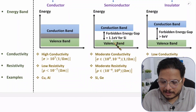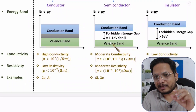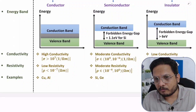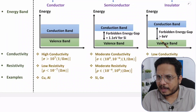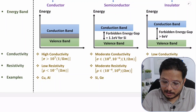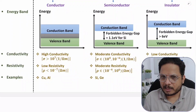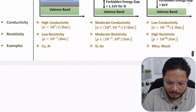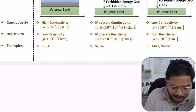For silicon the forbidden energy gap is around 1.1 electron volt. If you give 1.1 eV of energy to an electron, it will jump from the valence band to the conduction band and can participate in flow of current. For an insulator, the forbidden energy gap is greater than 6 electron volts, so there will be no flow of current even if you apply potential difference. These parameters frequently appear in competitive examinations, so you should remember them.